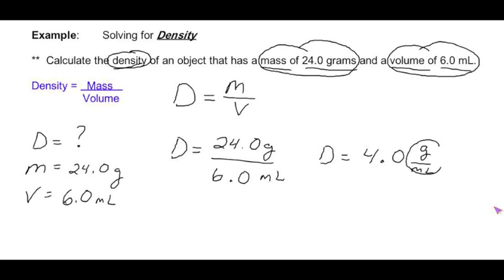Notice that grams per milliliter are both included in this derived unit of density. Neither one of them have been cancelled out throughout this process.